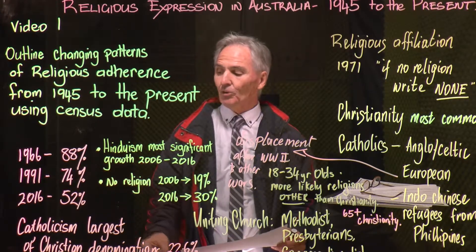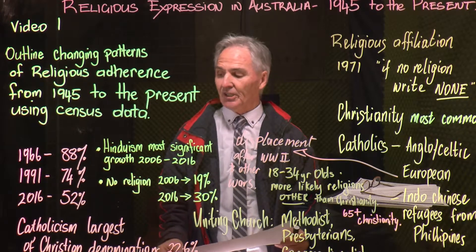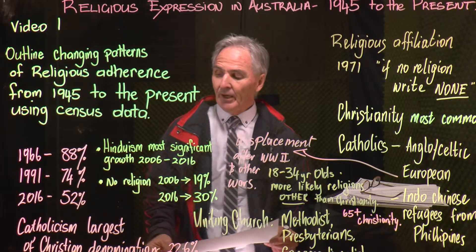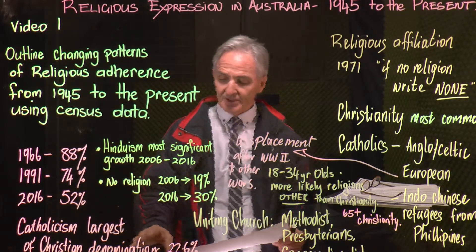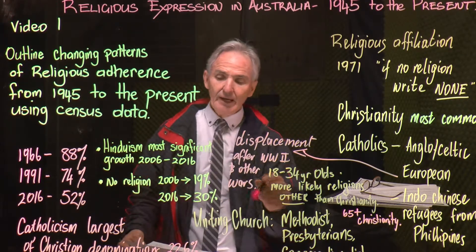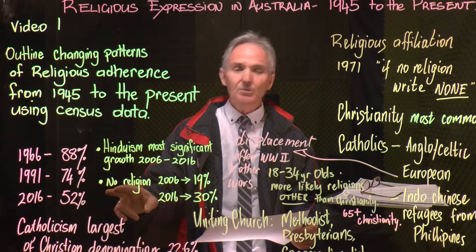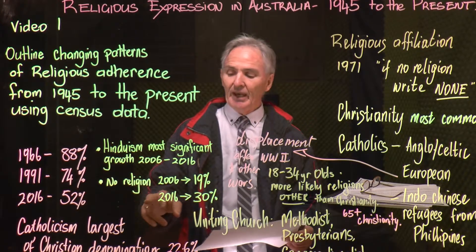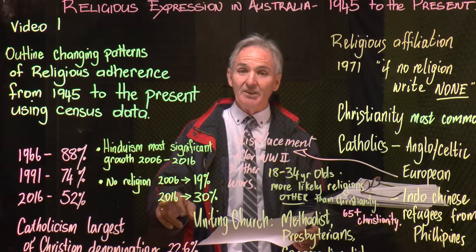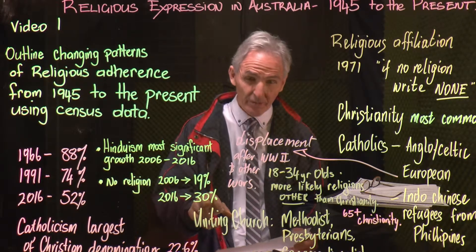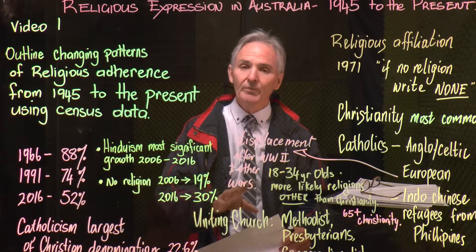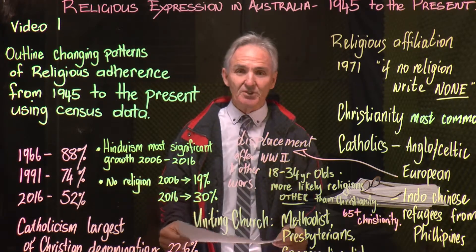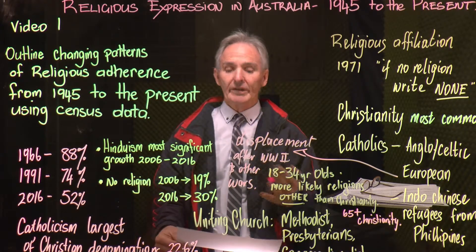In 1991, 74% identified as Christian, and in 2016 that figure was down to 52%, with Catholicism the largest denomination at 22.6%. The people who said they had no religion was 19% in 2006, and in the 2016 census that figure rose to 30% — so a third of those filling in the census form said they had no religion. That was a dramatic increase in the last census, and you need to be able to answer questions around why that is happening.